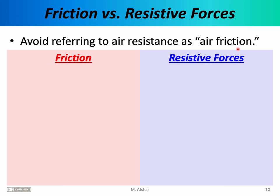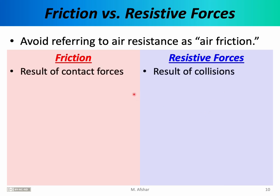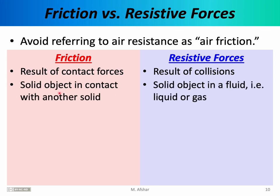To better understand the differences, let's do a side-by-side comparison. On a microscopic level, friction is the result of contact forces — atoms of one object coming in contact with atoms of another — but they don't necessarily need to be moving relative to one another. Resistive forces, on the other hand, are the result of collisions, so motion is crucial. Friction involves one solid object in contact with another solid object, like a box sitting on a table, whereas resistive forces involve one solid object in contact with a fluid — a liquid or a gas.